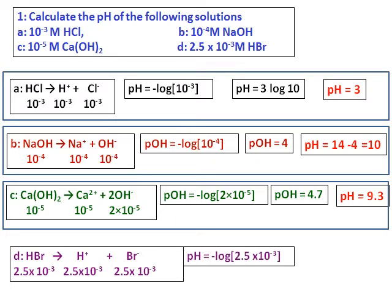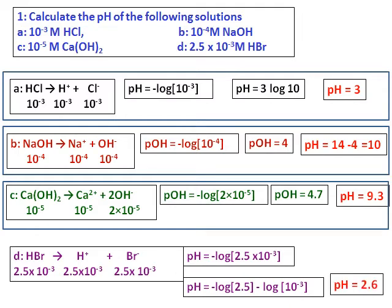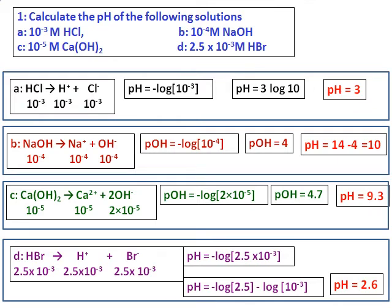And HBr is the same case as HCl and since it is a strong acid, hydrogen ion concentration is equal to the HBr concentration and substituting the values, I get the value of pH as 2.6.